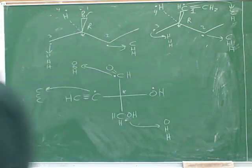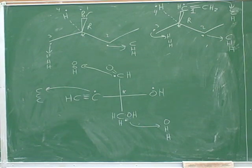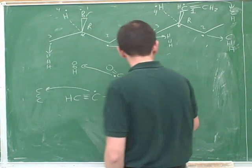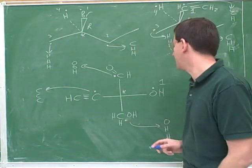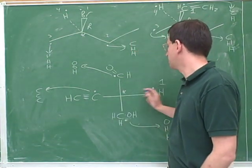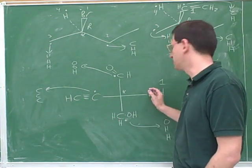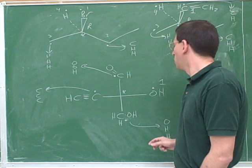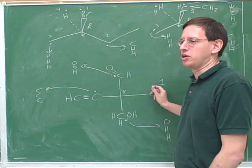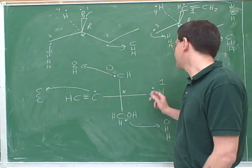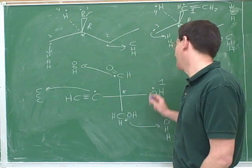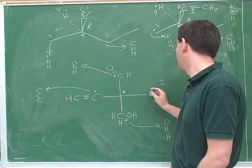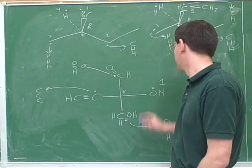We know that this is going to be number one because oxygen is higher priority than carbon. If you compare the dotted atoms, we've got oxygen compared to three carbons — oxygen is better. So we don't make a list here. You only need to make the list if you've got a tie. There's no tie here, so we automatically say this is number one.